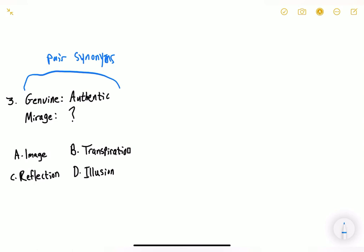First, let's look at what does mirage mean. It means an optical illusion caused by atmospheric conditions, especially the appearance of a sheet of water in a desert or on a hot road caused by the refraction of light from the sky by heated air. So that was a lot of information. So we can kind of think of it as just an optical illusion or a hallucination. So what is the synonym of optical illusion or a hallucination?